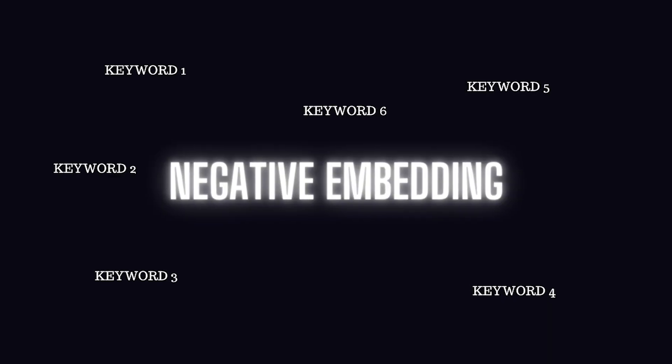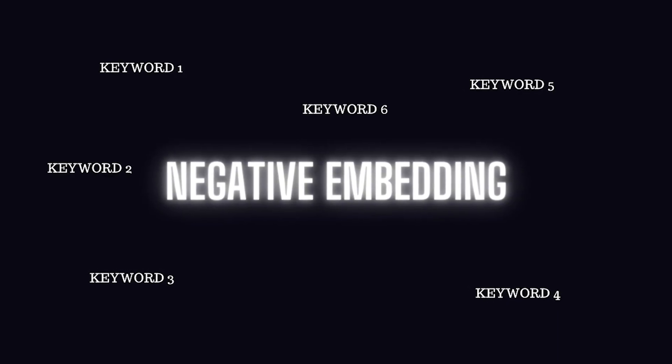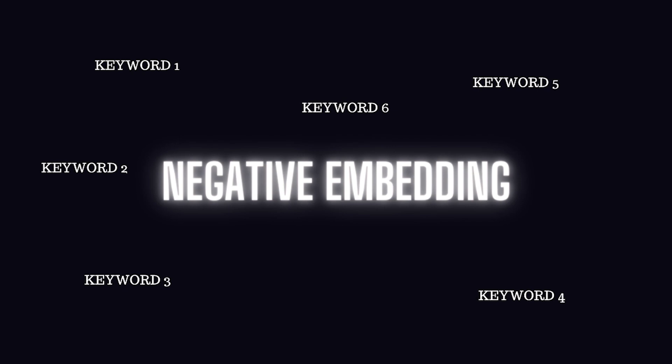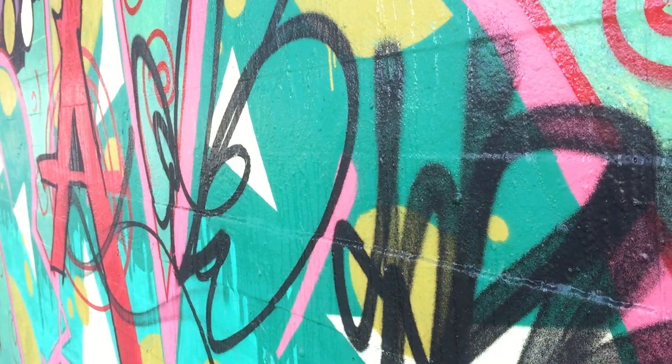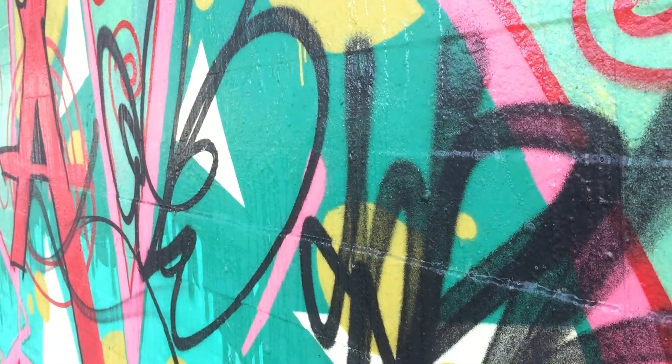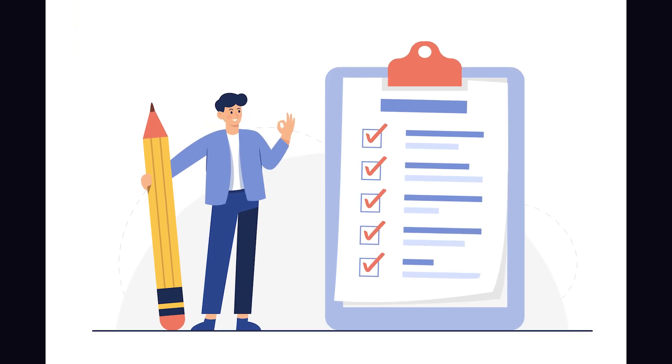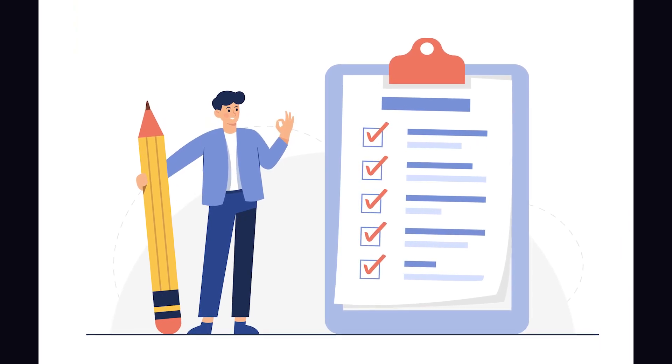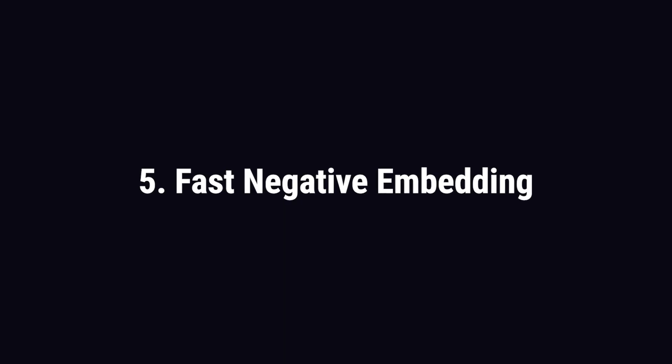Negative embeddings help you make your art better. It's like having a bunch of negative prompts packed in one keyword. If you are a Stable Diffusion artist, then these are the five negative embeddings you must have. See if you have at least one of these.